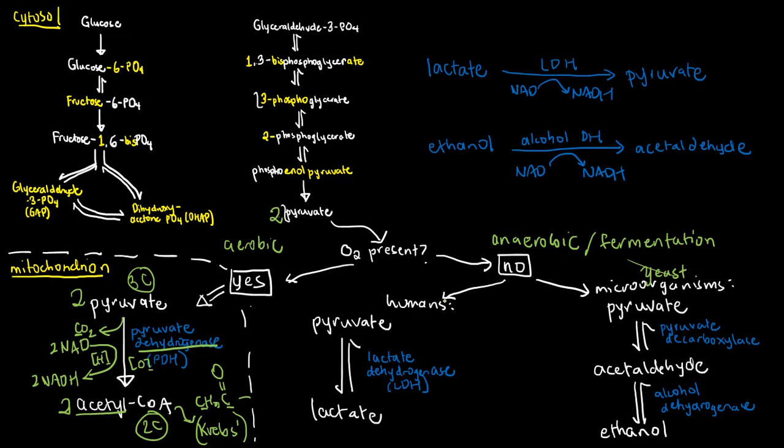For us humans, pyruvate, if it is inside a cell which is said to be in the anaerobic state, will not actually go to the mitochondrion. It will stay in the cytosol and will instead be converted by a different enzyme named lactate dehydrogenase, giving rise to lactate or what we call lactic acid. You have to know that lactate is a three-carbon compound. So if pyruvate has three and lactate has three, there was no carbon lost here.